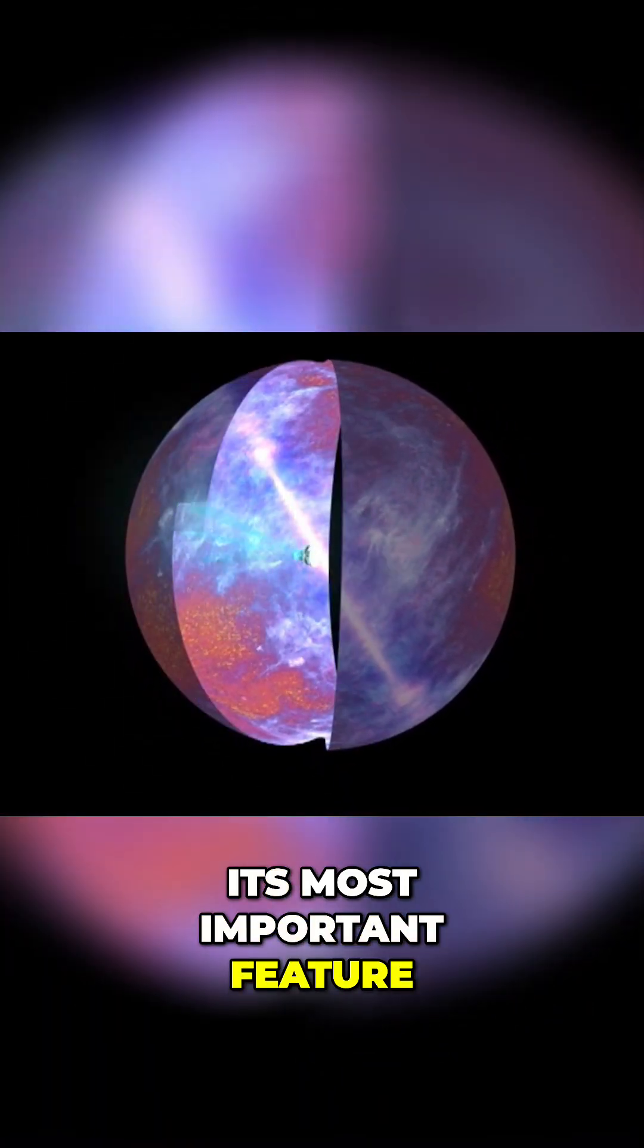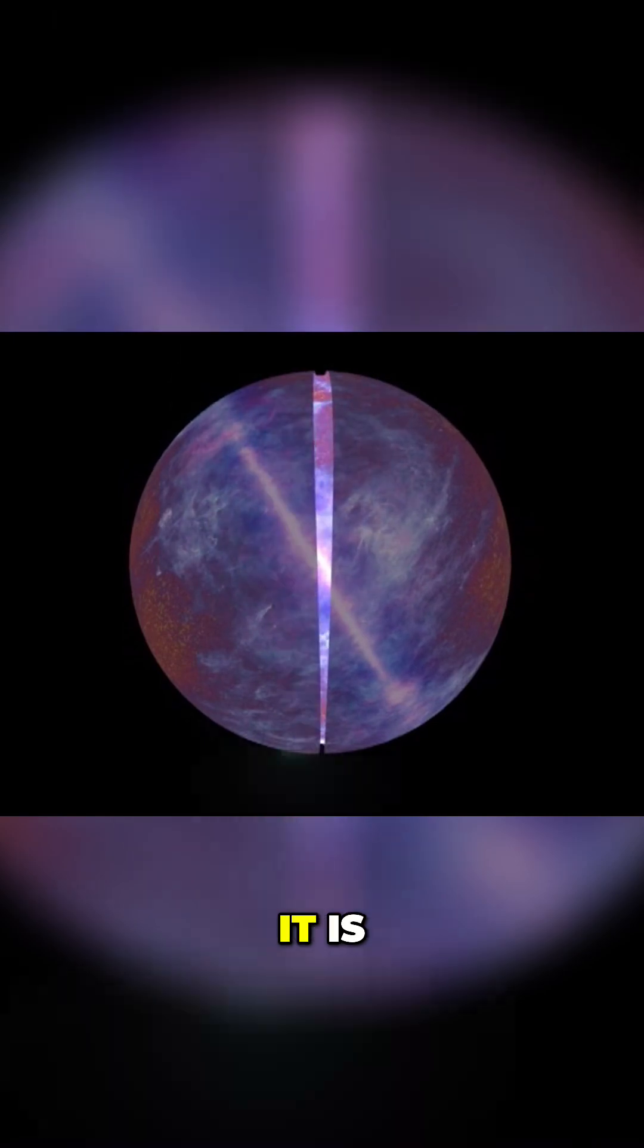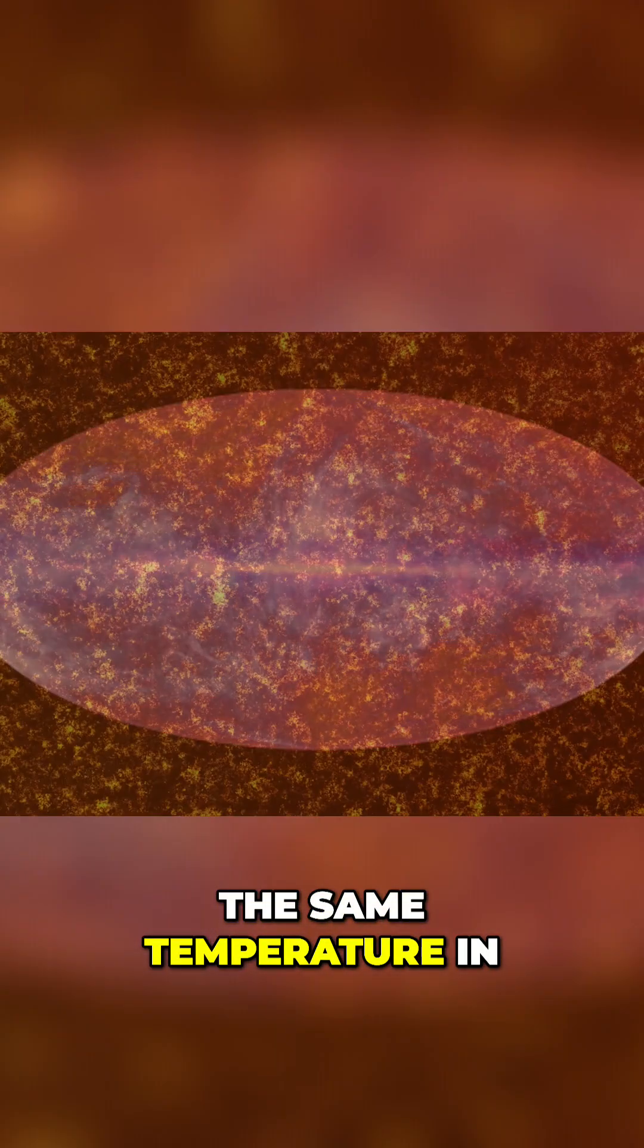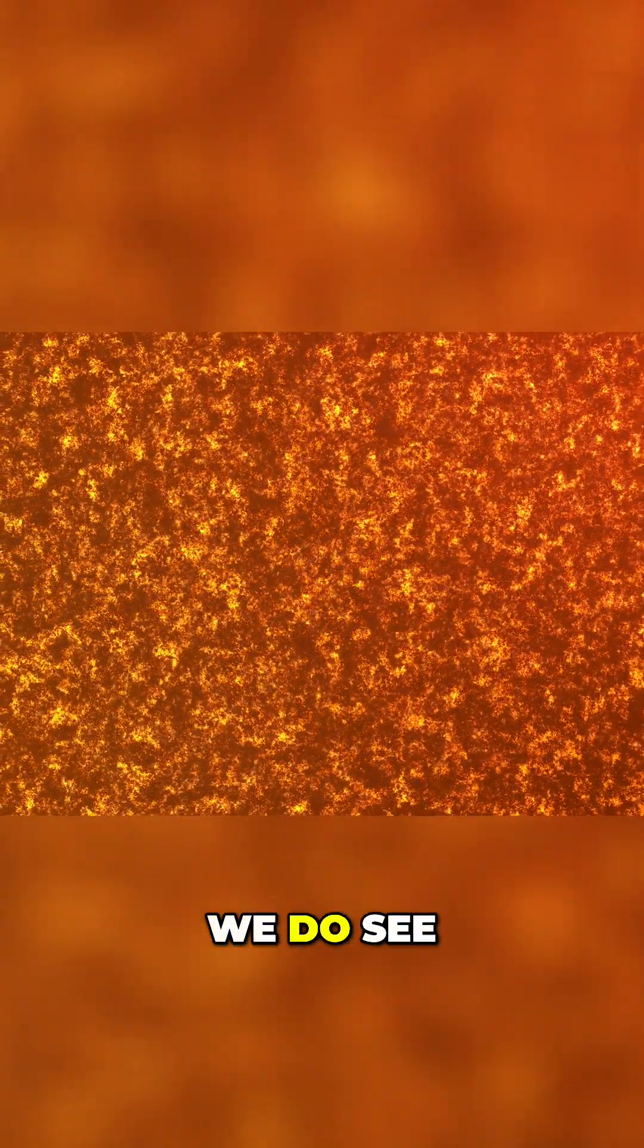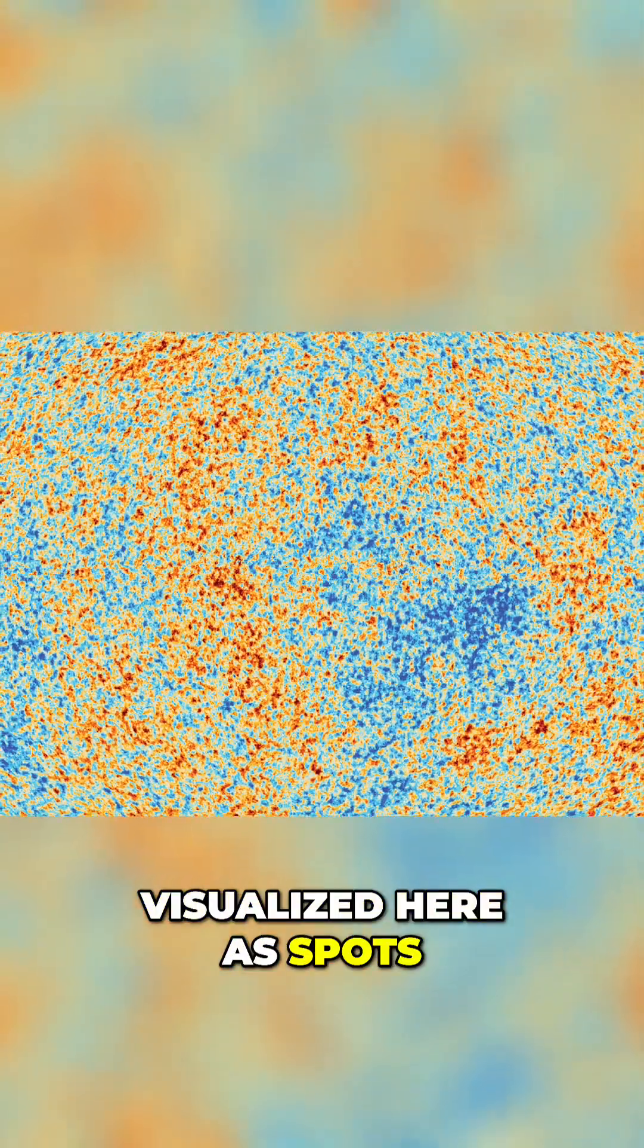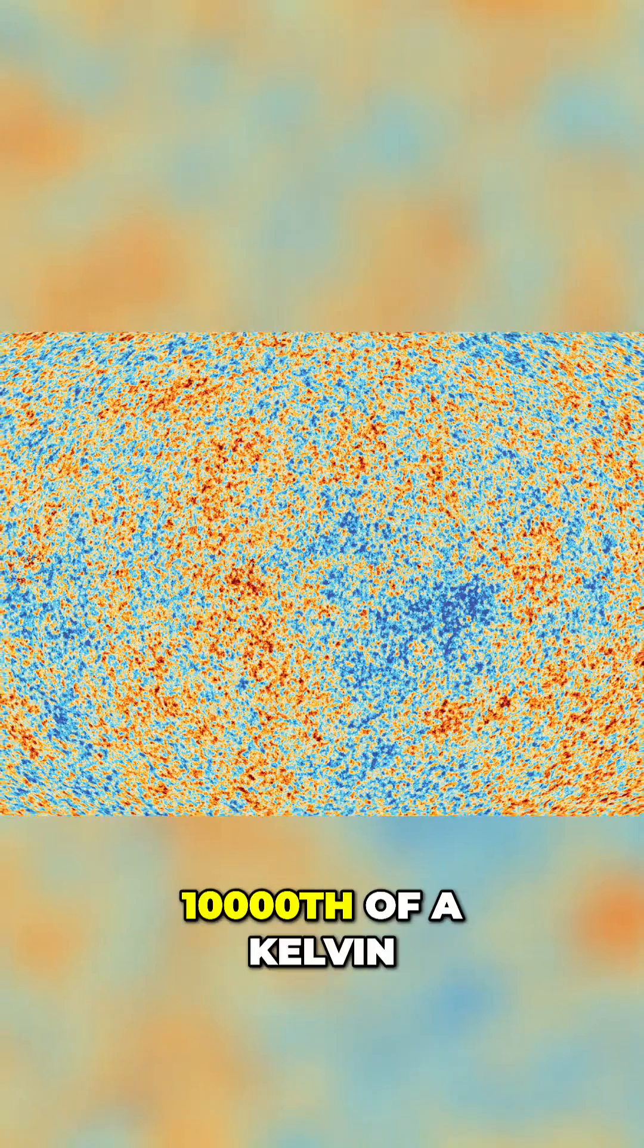Its most important feature is how incredibly uniform it is. This radiation has nearly the same temperature in every direction. Nearly, because the tiny variations we do see, visualized here as spots, are only about one ten-thousandth of a Kelvin.